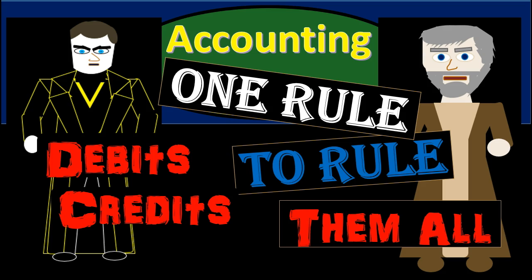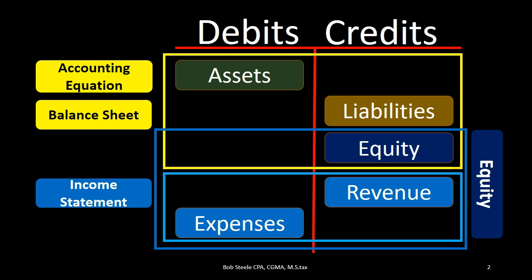In this lecture we will talk about debits and credits and the one rule to rule them all. In order to apply the one rule to make debit and credit accounts go up and down, we first need to memorize the normal balances of the account types. I recommend using a cheat sheet as much as possible to know what those normal balances are, so we can then apply the one rule to increase or decrease these accounts.